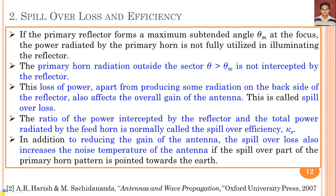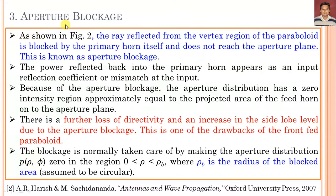The third important parameter is aperture blockage. As seen from the geometry figure, the radiation reflected from the vertex region of the paraboloid is blocked by the primary horn itself and does not reach the aperture plane. This power reflected back into the primary horn appears as an input reflection or mismatch at the input port.